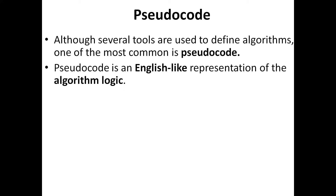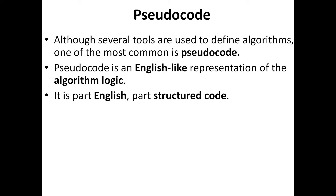Pseudocode is a standard way of writing algorithms and it is more of an English-like representation. Even a high-level language program is more of English, but algorithm or pseudocode is even more English — you can follow grammar while writing pseudocode. It will have two parts: one part will be simple English to express the basics like the name of the algorithm, the motive or purpose, the initial requirements, and the expected output.